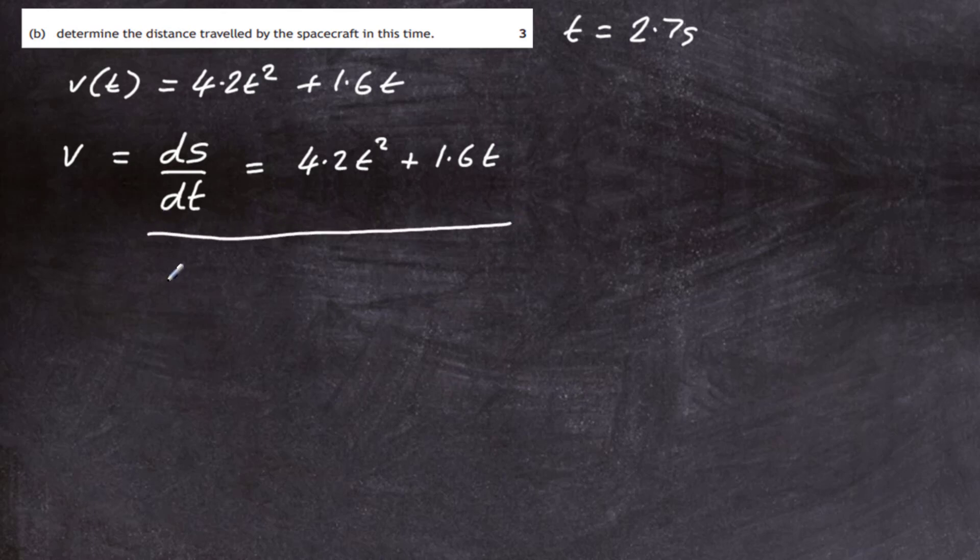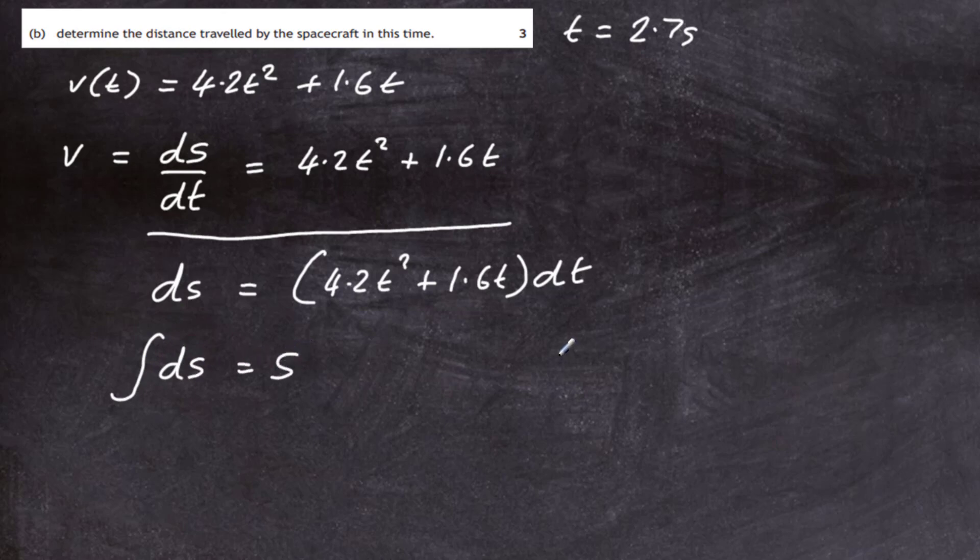If we cross multiply by dt, ds equals 4.2t squared plus 1.6t dt. And you can see now if we integrate ds, that will give us s, the displacement, which will be the distance travelled. The integral from 0 to 2.7 seconds of 4.2t squared plus 1.6t dt.